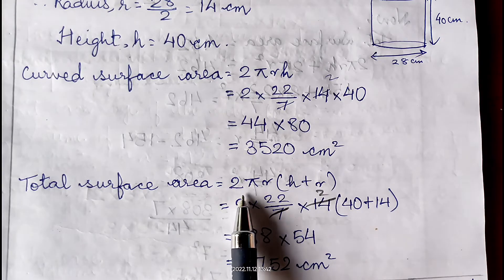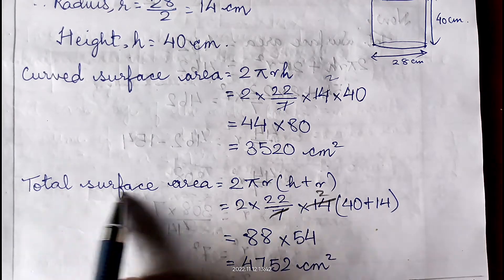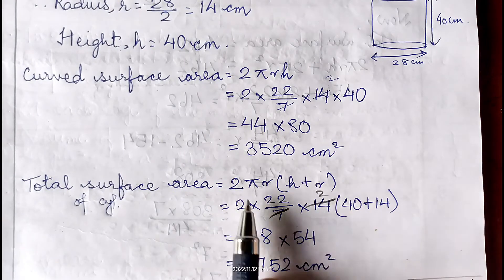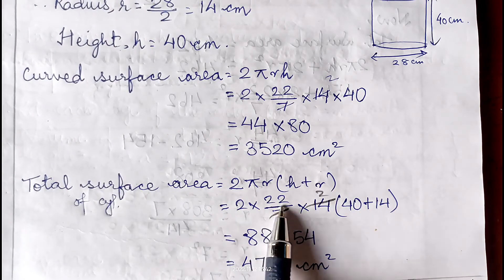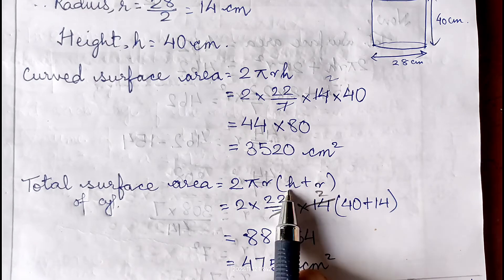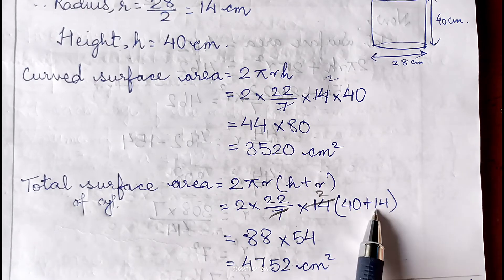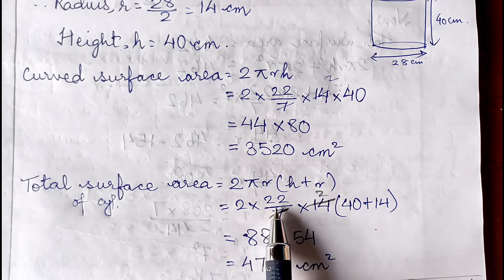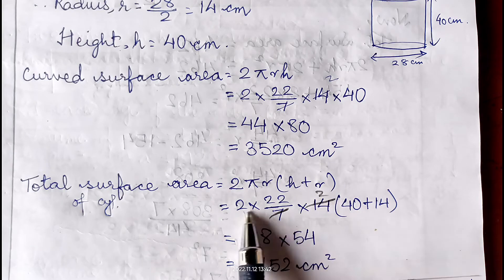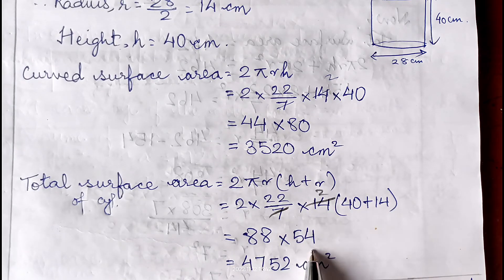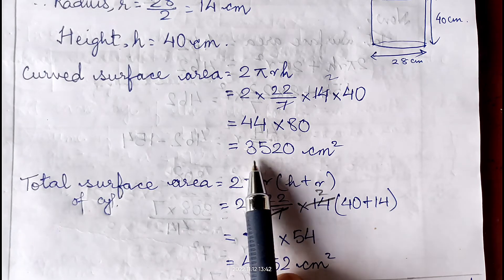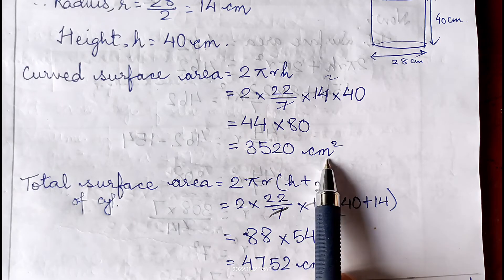For the total surface area of the cylinder, the formula is 2πr(h + r). So 2 × (22/7) × 14 × (40 + 14) = 2 × (22/7) × 14 × 54. Cancelling 7 and 14 gives 2; then 2 × 22 × 2 × 54 = 4752 cm². Therefore curved surface area = 3520 cm² and total surface area = 4752 cm².